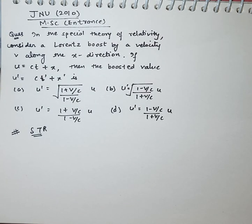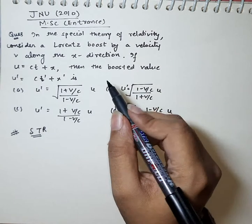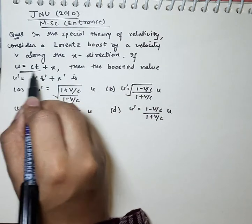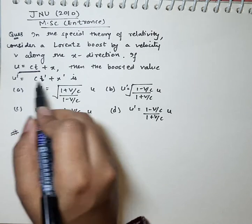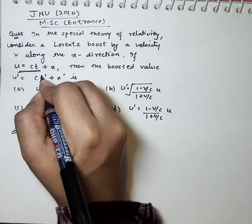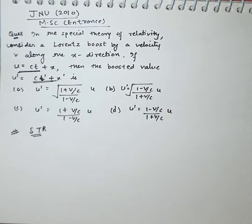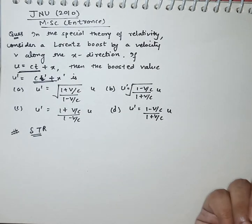In the special theory of relativity, consider a Lorentz boost by velocity v along the x direction. If u equals ct plus x, where u is the velocity, then the boosted velocity u' has to be determined. u' will come from this formula and we need to modify it.